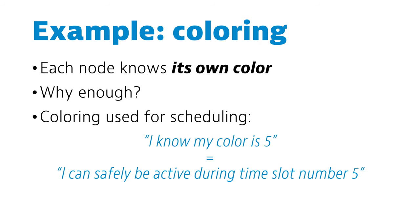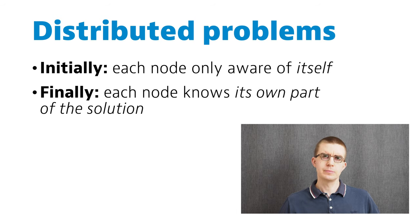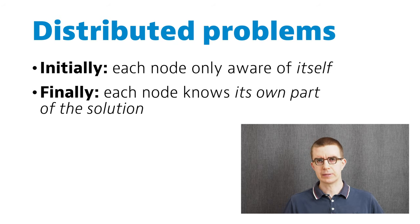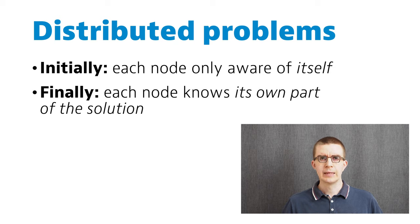If we are forming pairs, each node needs to know which of the neighbors is its pair. If we do graph coloring, each node needs to know its own color. And this is already enough for each node to know what to do. For example, if we use graph coloring for scheduling: if I know that my color is 5, I know that I can be safely active during time slot number 5. I don't need to know everyone's colors — knowing my own color is enough to know when to act. So this is what we study in distributed algorithms: solving graph problems so that all nodes take part in the computation. Both input and output are distributed. Nobody knows the whole input, and each node only needs to know its own part of the output.